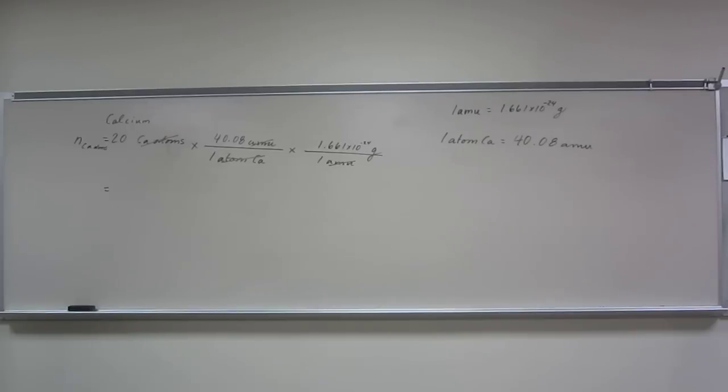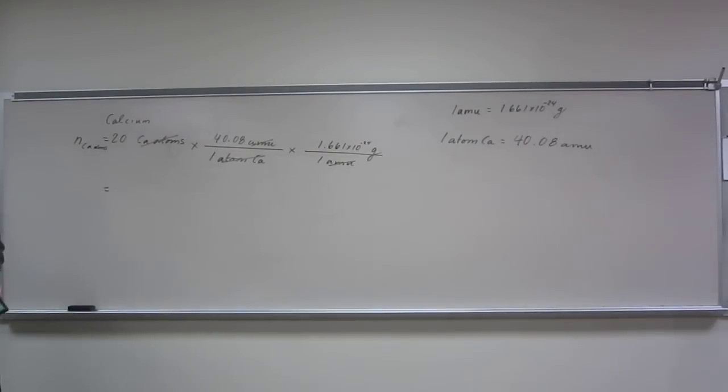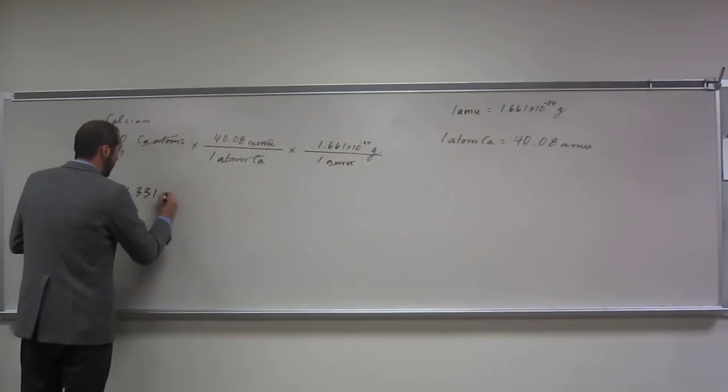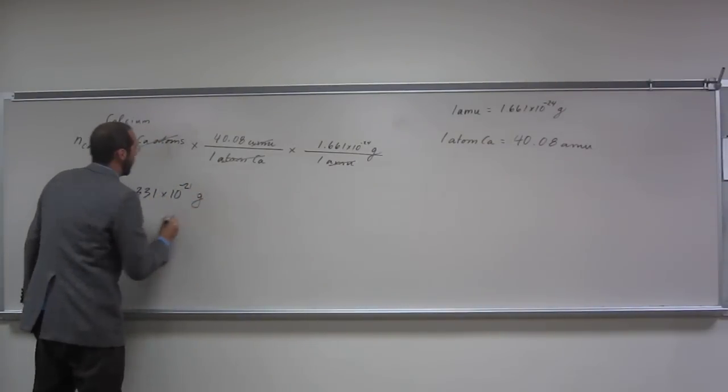Okay, so let's just plug in: 20 times 40.08. And so this one, you would expect to get a negative exponent. I'm going to take this to four sig figs, just because. 1.331 times 10 to the negative 21st grams.